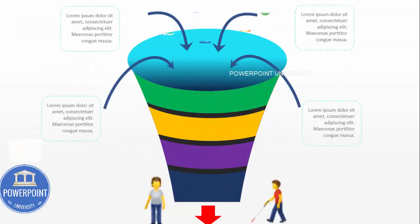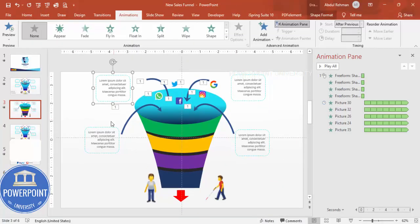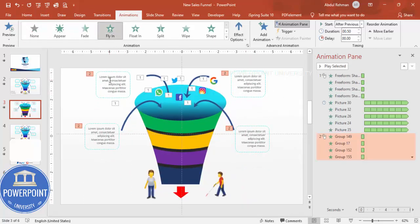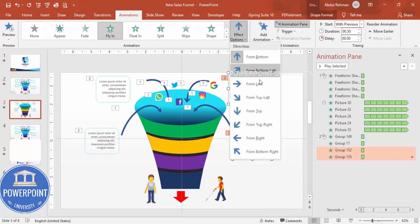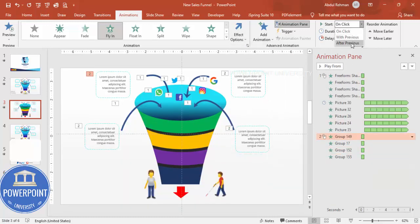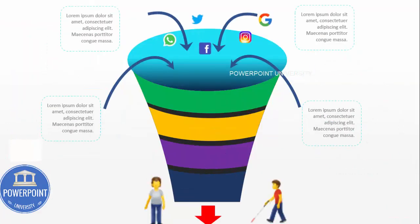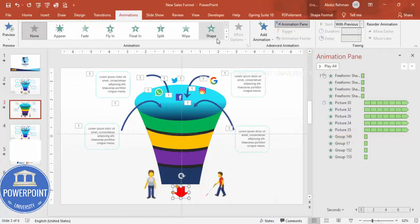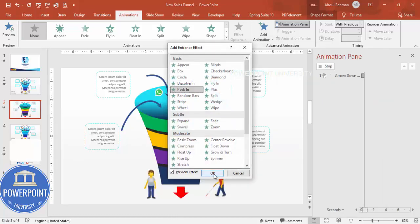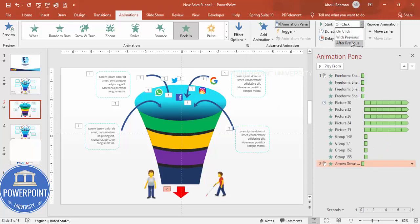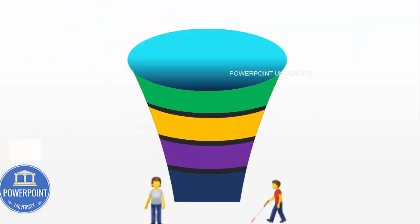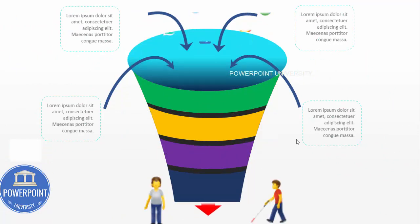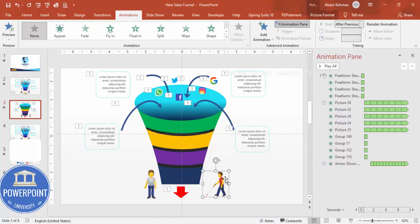For other objects, add a Fly In animation — one coming from the bottom-left and another from the bottom-right — set to trigger With Previous. For the central down arrow, go to More Entrance Effects > Peek In from the top, trigger After Previous, set timing to Very Fast, and repeat Until Next Click or End of Slide. You can also add animation effects to the people icons in a similar way to complete the slide.